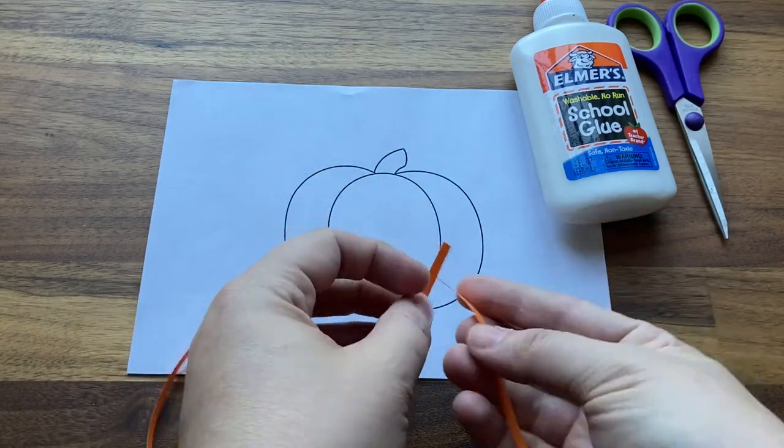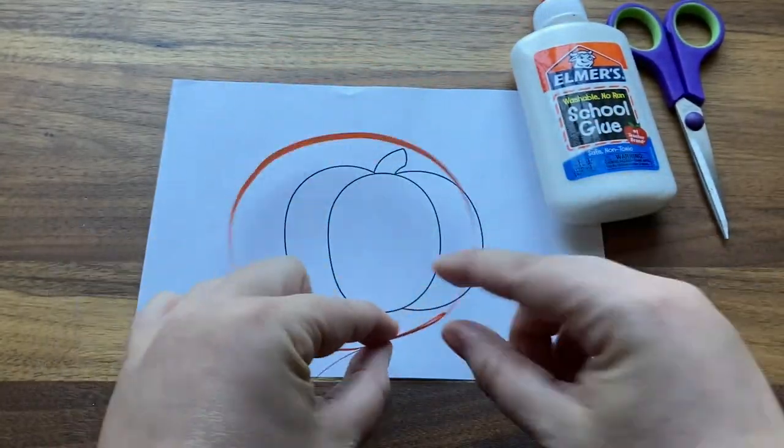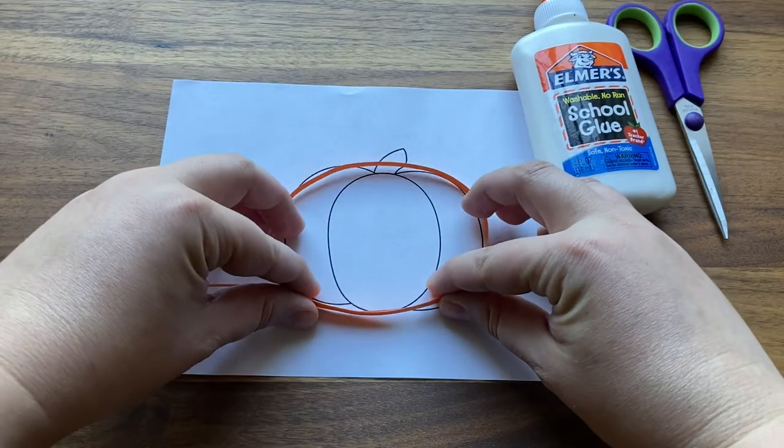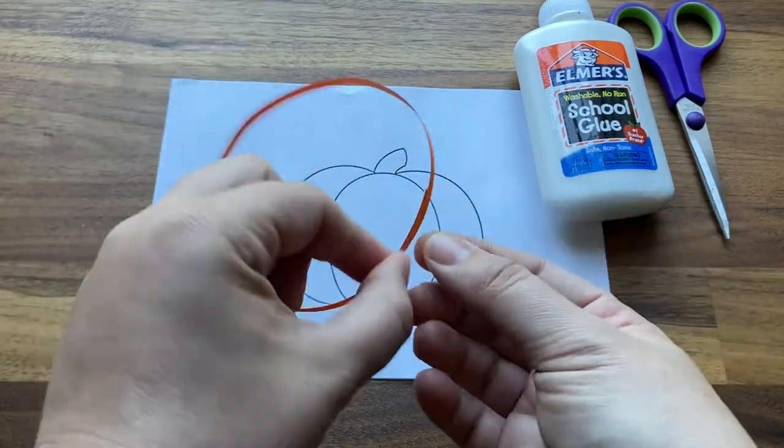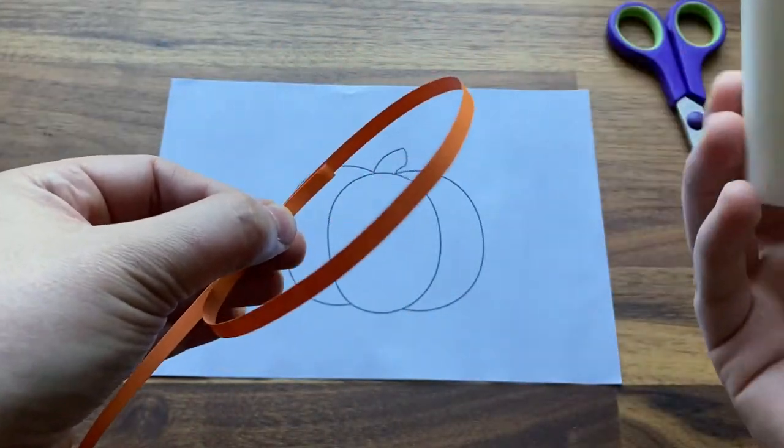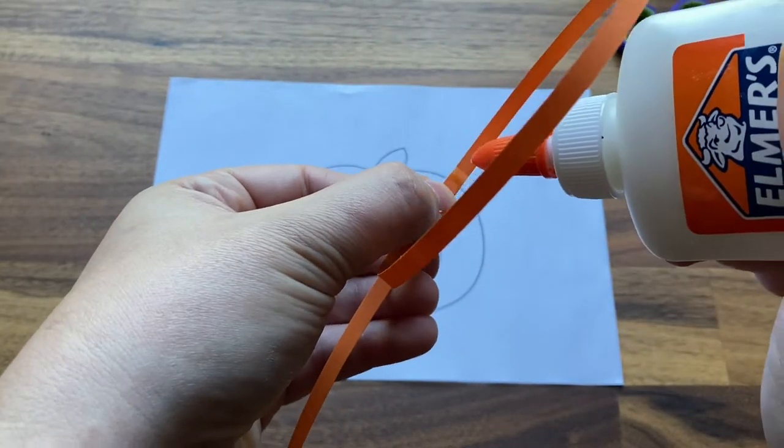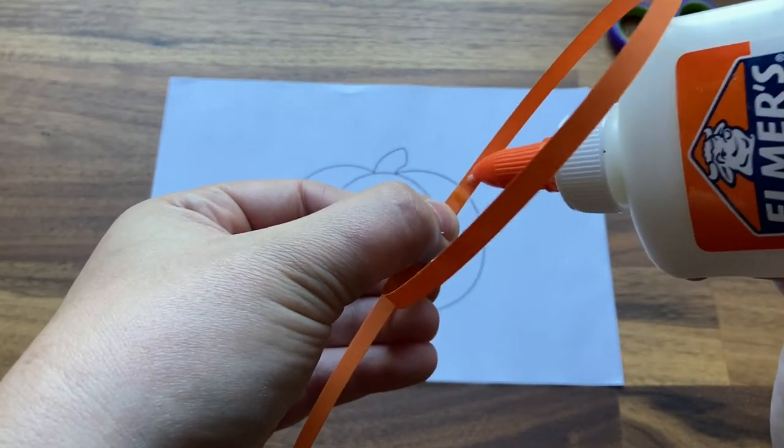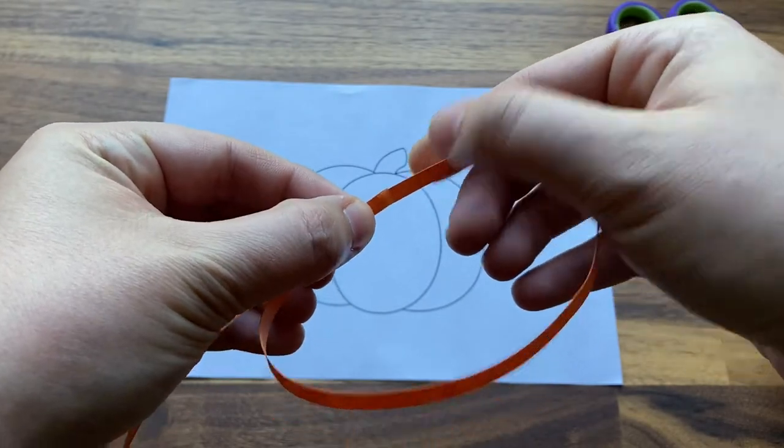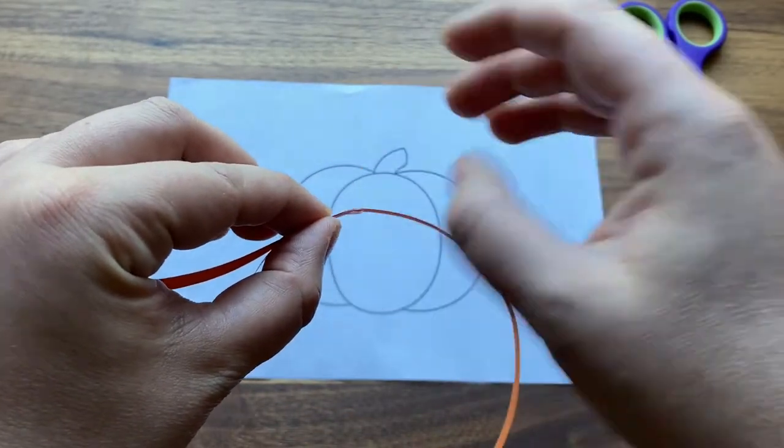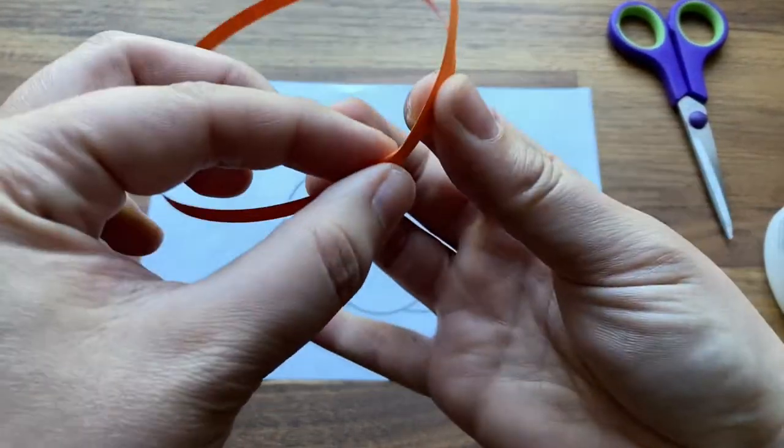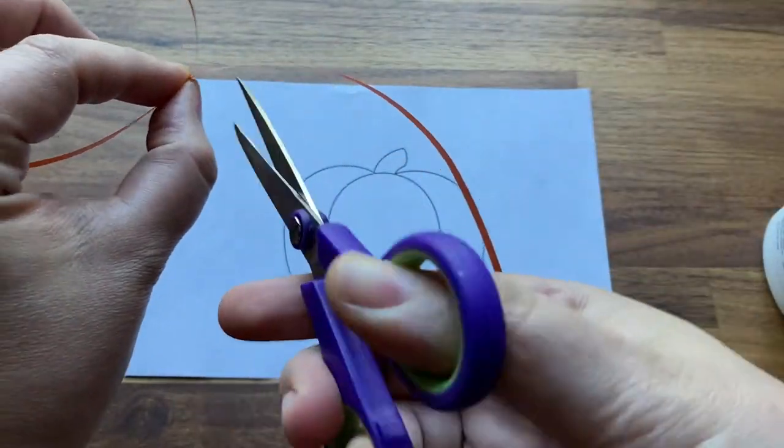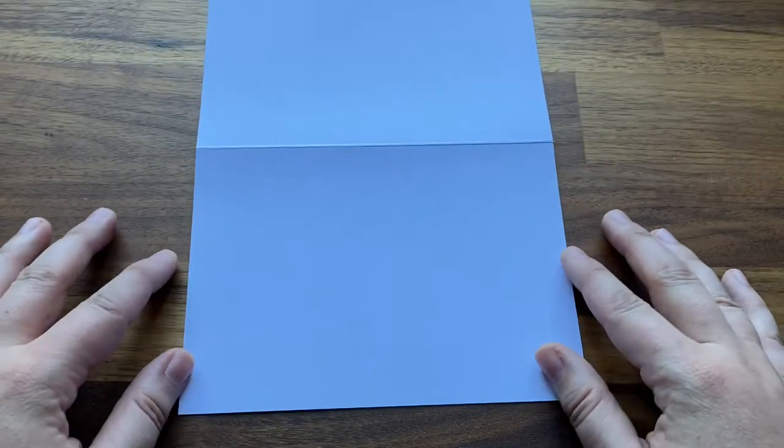Start by making a circle out of a piece of orange quilling paper. Use the outside of your pumpkin template as a general guide for size. Put a tiny dot of glue at the end of the strip and then cut off the excess paper. Now repeat this process for the circle in the middle of the pumpkin as well, so you end up with two circles, one slightly larger than the other.